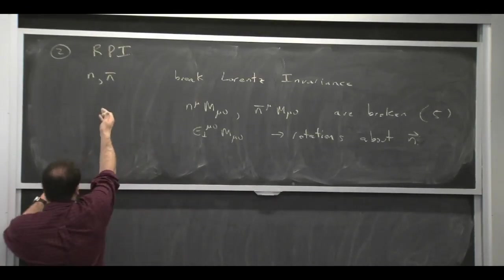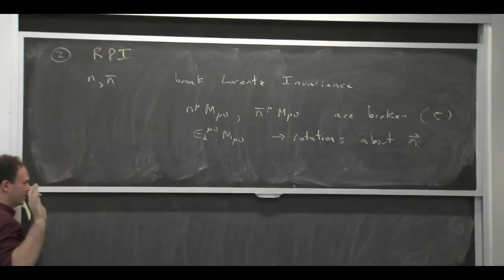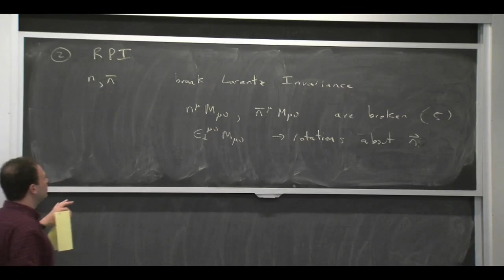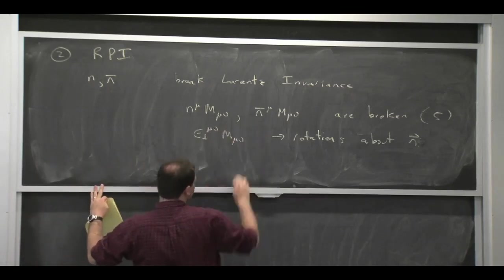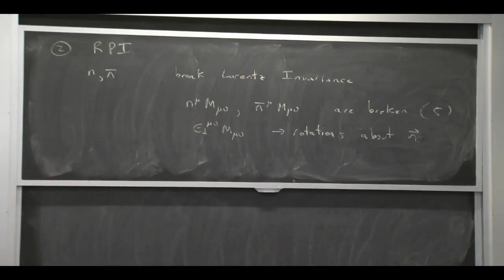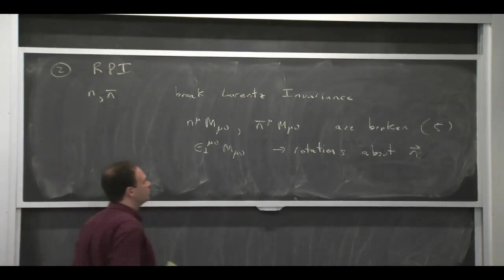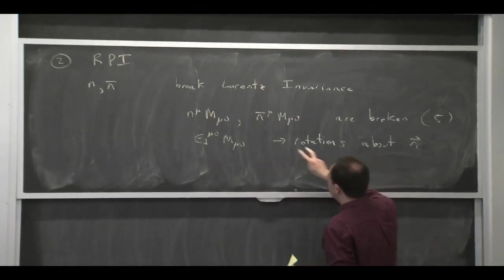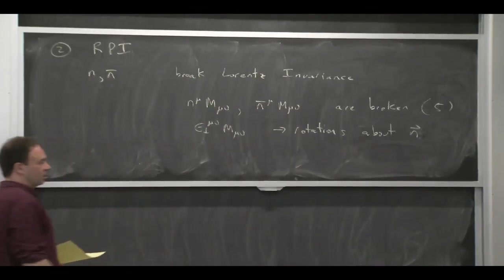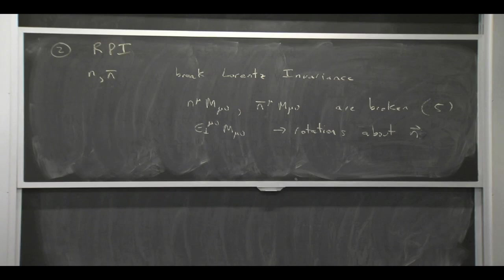So those rotations would act in the components of these guys that are zero, if you like. So there's no issue there. And these guys are the ones that are connected to the pieces that were non-zero in general. So there's going to be a larger, because there's sort of five things here, and because there's two vectors, it's going to be a larger set of reparameterization symmetries than in HQET.